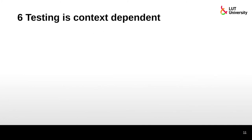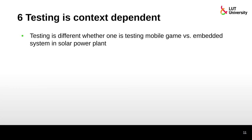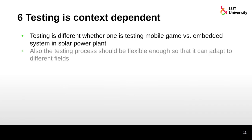Sixth principle: testing is context-dependent. Testing is very different depending on whether you are testing a mobile game versus an embedded system in a solar power plant. The testing process should be flexible enough to adapt to different fields. You do not want a testing process so rigid that it only works for one specific type of game — if the company moves to a different product, you would have to build an entirely new process, which is not ideal.